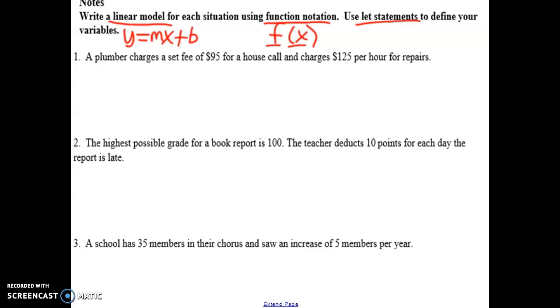So the first one up is a plumber. A plumber charges a set fee of $95 for a house call and then $125 an hour for repairs. One of those is a rate and one of those is an initial value. Well, hopefully you'll get more comfortable in seeing that $95, a set fee, is the initial value. And the rate of change is the $125 because it's happening every hour. So we've got our two numbers. But we still need kind of like the Y and the X.